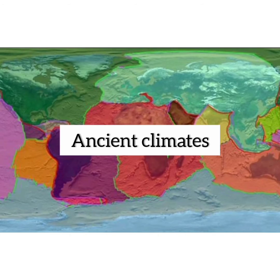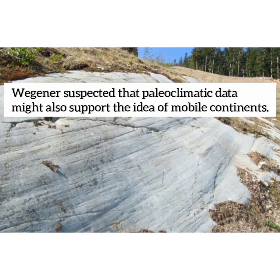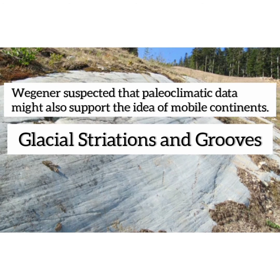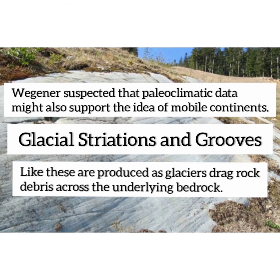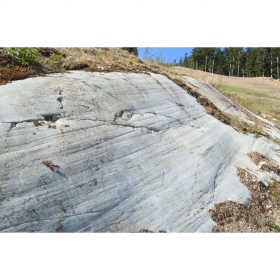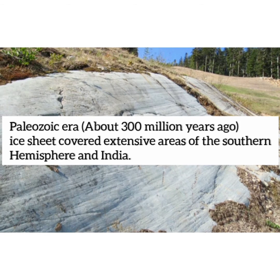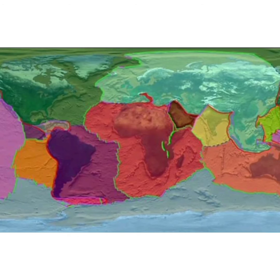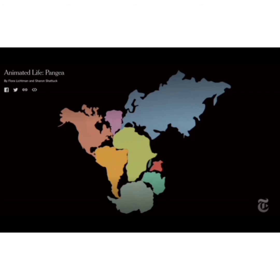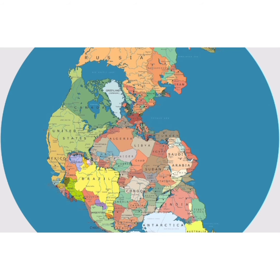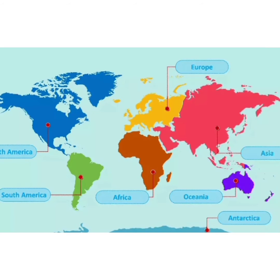Wegener suspected that paleoclimatic data might also support the idea of mobile continents. Glacial strata and grooves like these are produced as glaciers drag rock debris across the underlying bedrock. Near the end of the Paleozoic era, ice sheets covered extensive areas of the Southern Hemisphere and India. Wegener's proposal did not attract much attention until 1924, when his book was translated into English, French, Spanish, and Russian.